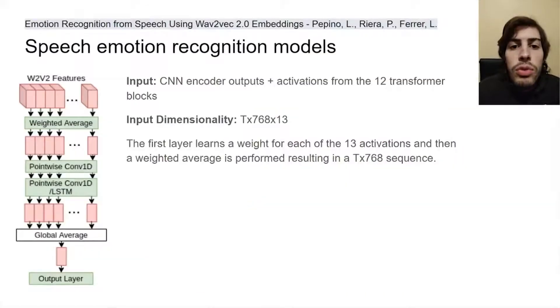We first extracted features from the Wav2Vec2 model by using activations from the CNN encoder and each of the transformer blocks. This gives us 13 sequences. We hypothesize that the most relevant features might not necessarily be at the last layers. So we let our model learn weights for each of the 13 sequences, and then we average them.